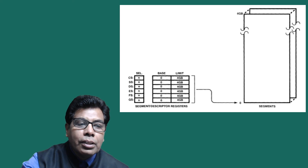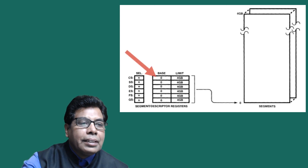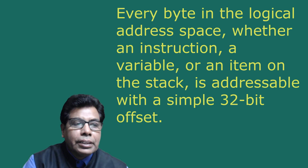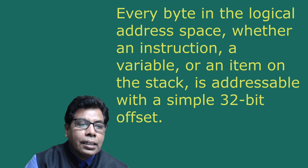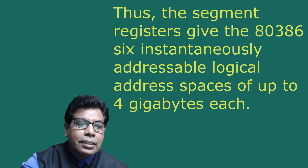As illustrated in the figure, if all descriptor registers are loaded with base addresses of 0 and limits of 4GB, the segments effectively disappear. Every byte in the logical address space — whether an instruction, a variable, or an item on the stack — is addressable with a simple 32-bit offset. Thus, the segment registers give the 80386 six instantaneously addressable logical address spaces of up to 4GB each. When these segments coincide, a program sees a single 4GB logical space identical to that provided by less flexible 32-bit architectures.